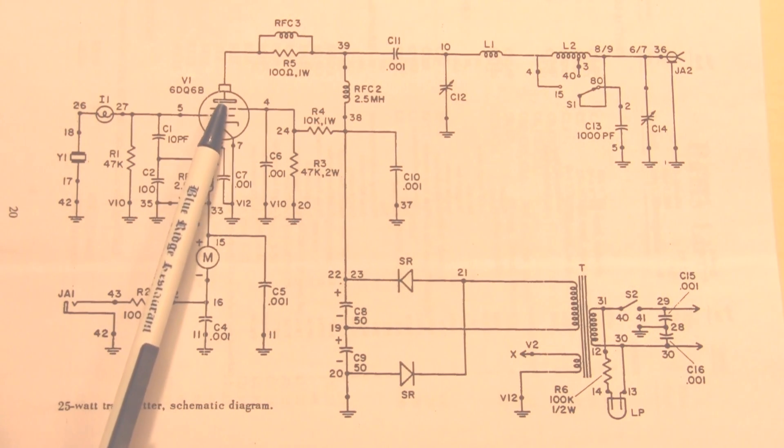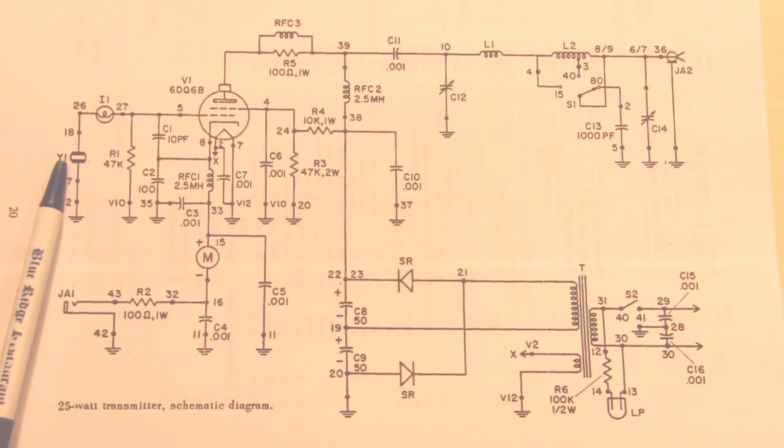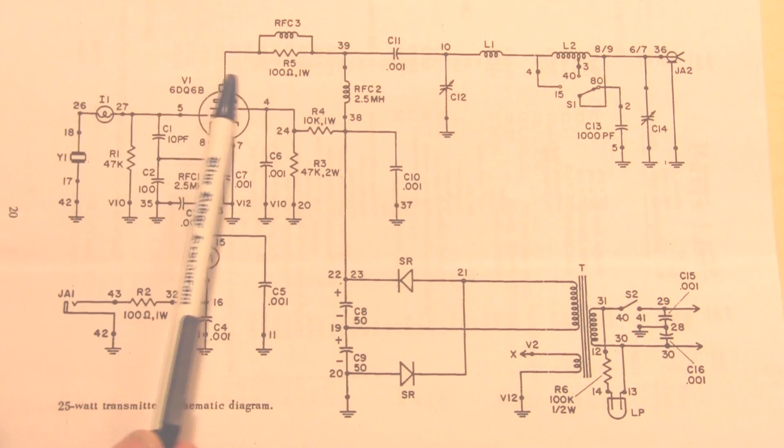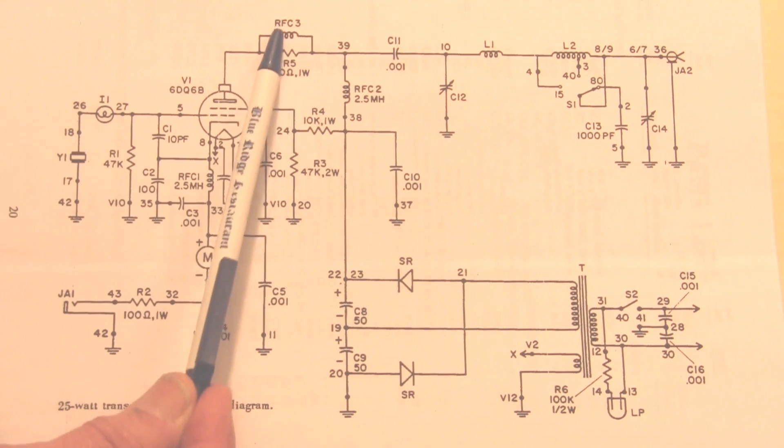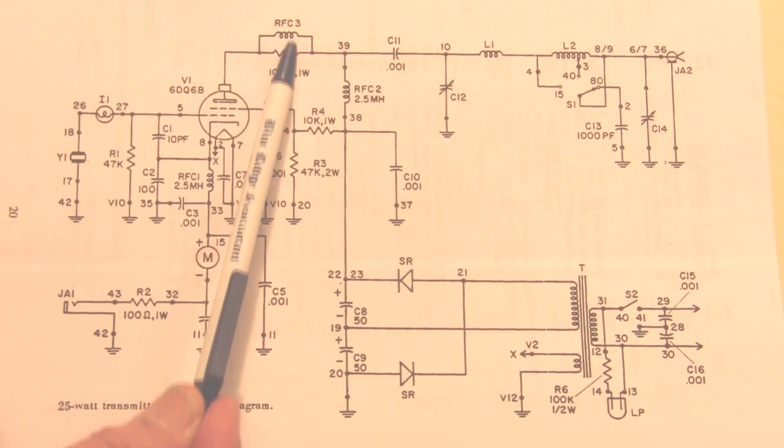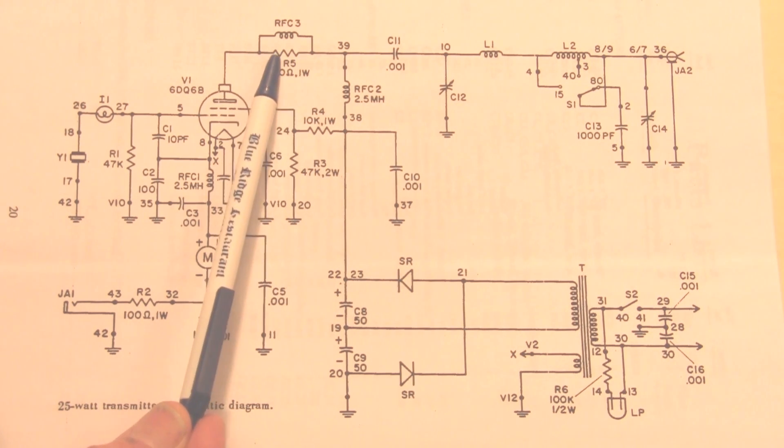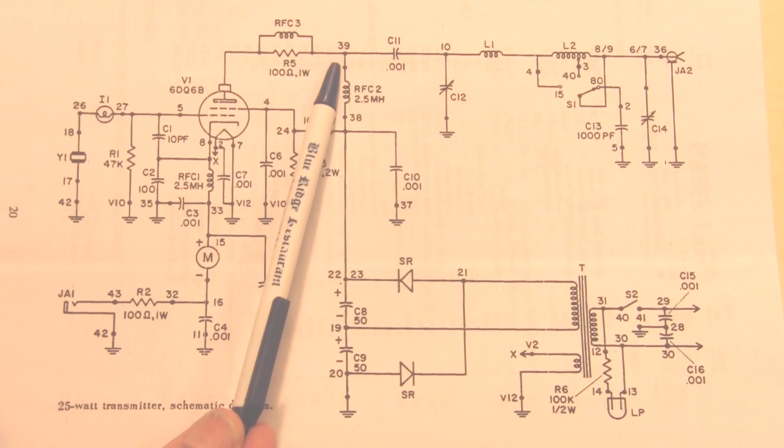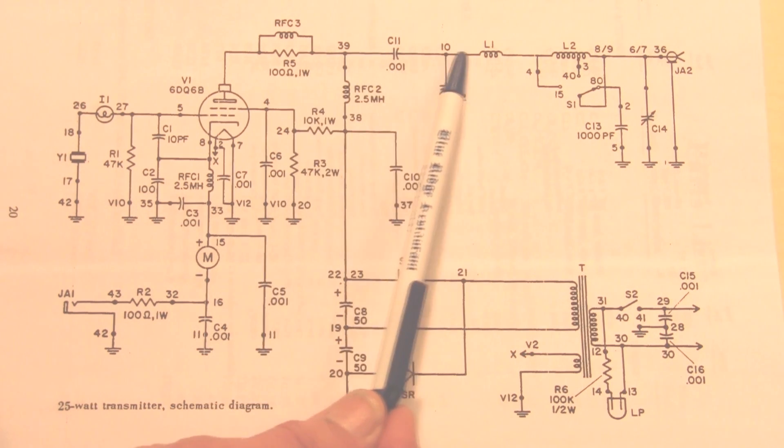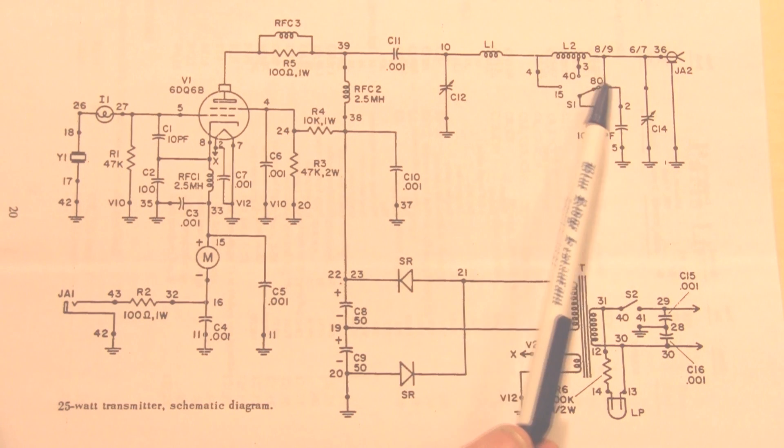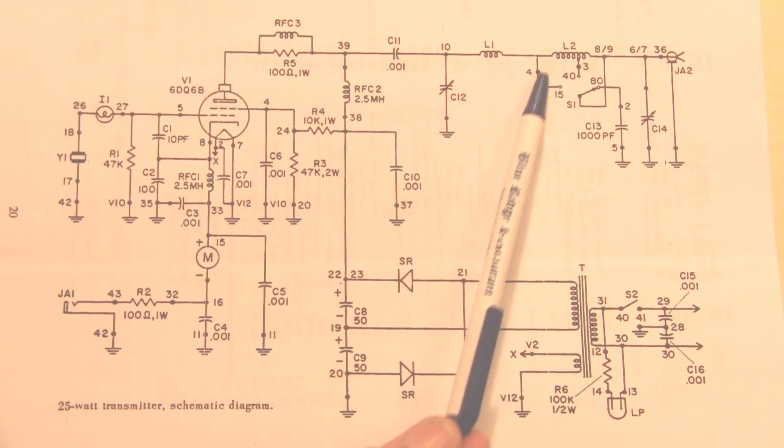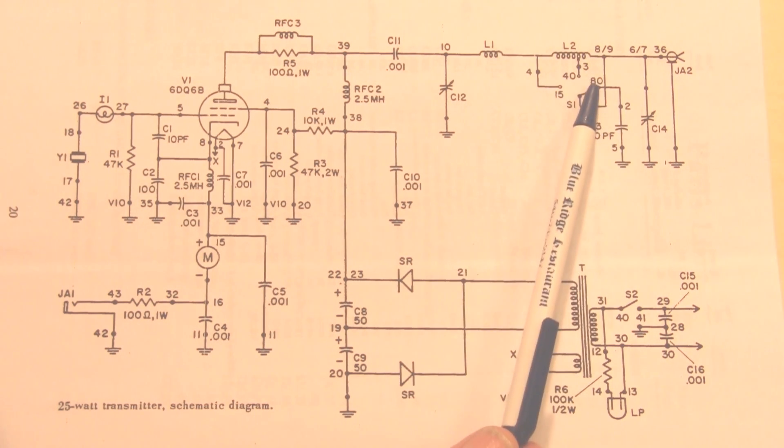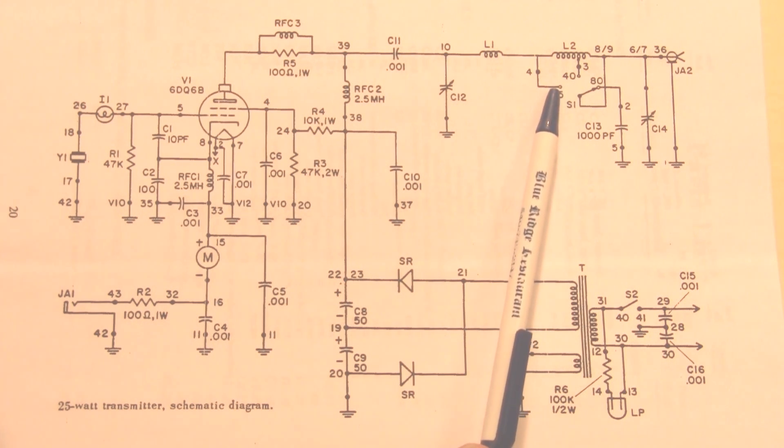This is a self-oscillating tube controlled by the crystal. Here's a parasitic suppressor which suppresses spurious RF that we don't want. And here's an RF choke separating the RF from the DC power. Going on out to the right here is the tank circuitry. This is a pi network. Here's the switch. We're switching between 80 meters, 40 meters, and 15 meters.